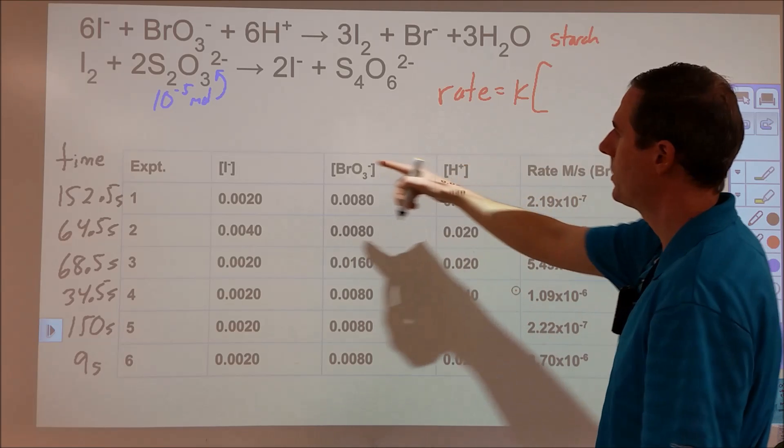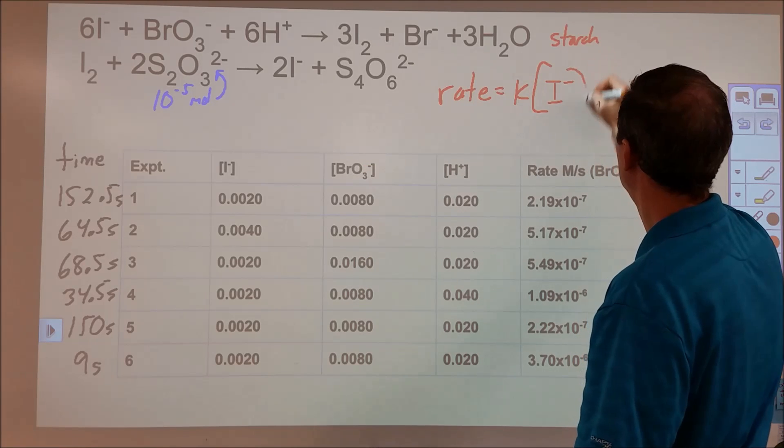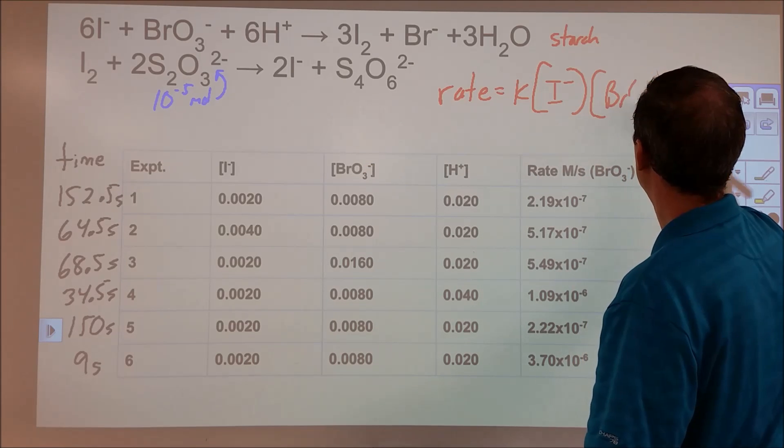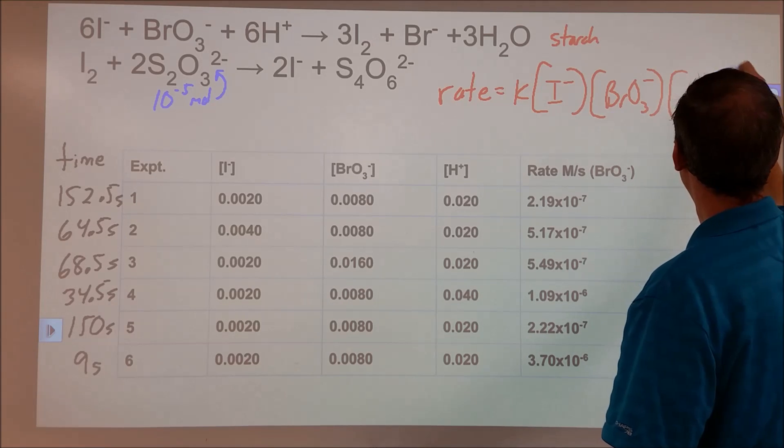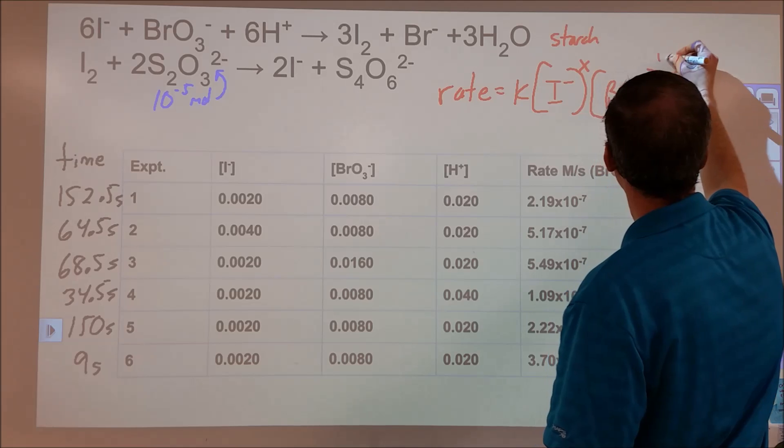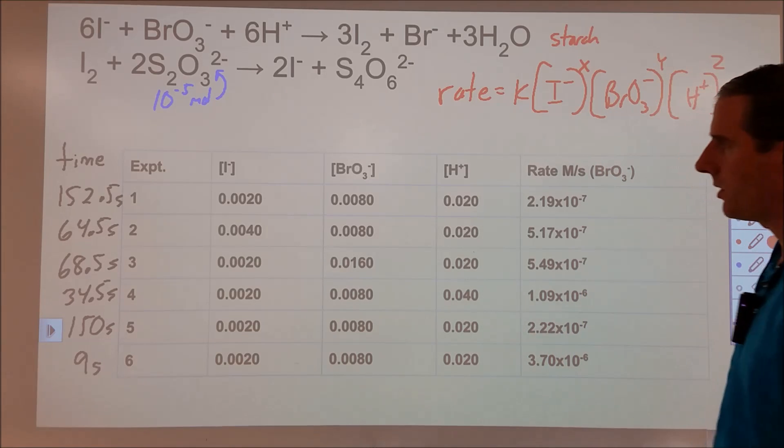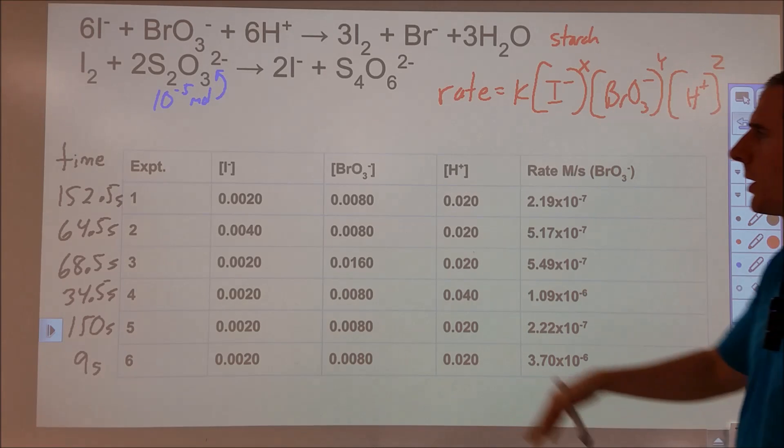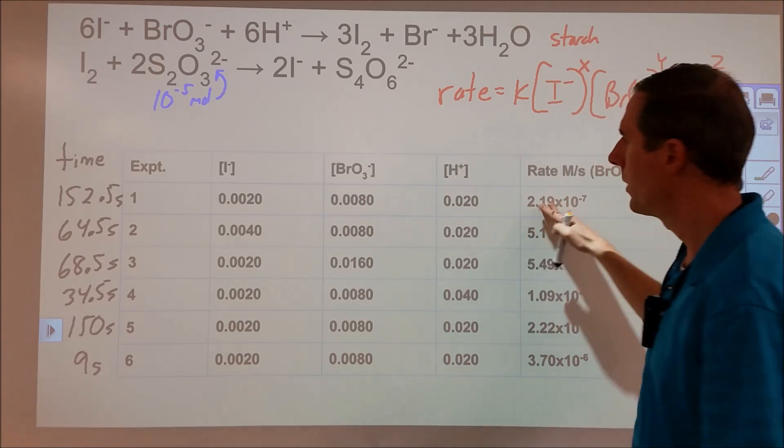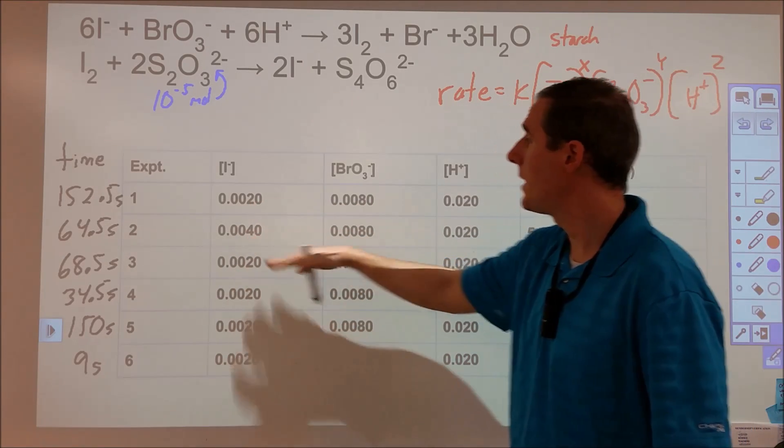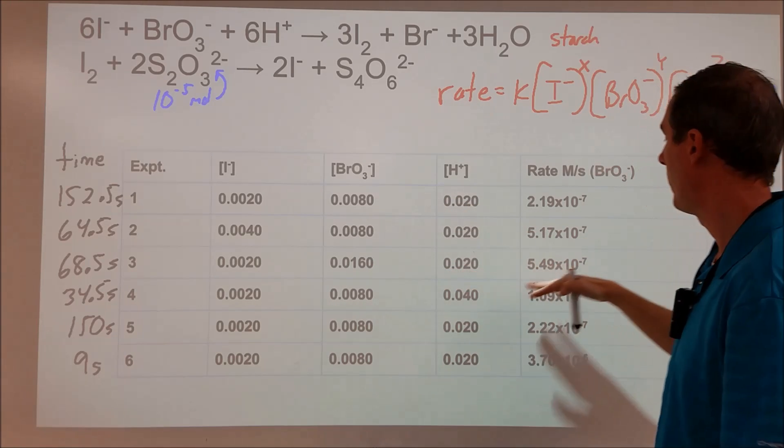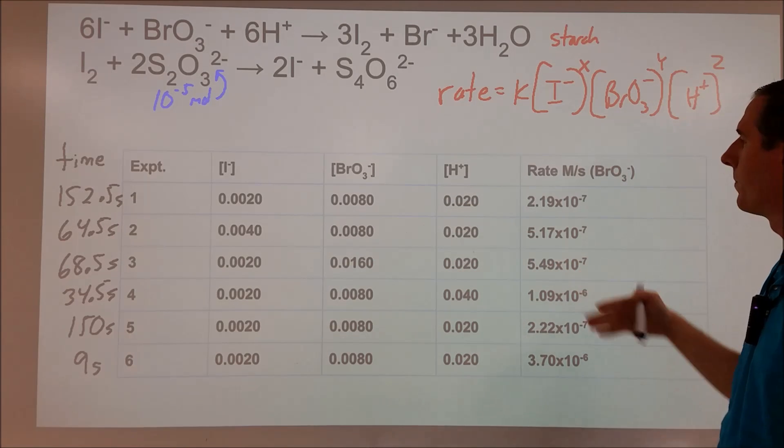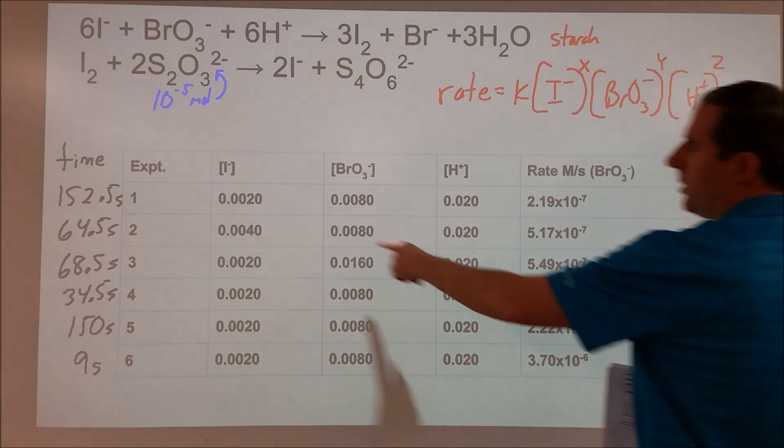What we want to do now is, we want to figure out what our exponents are for the following. Rate is equal to K times concentration of iodide times bromate times H+. And each one of these is raised to some power that we would like to figure out. So we'll call them X, Y, and Z for now. And what we're going to do is, we're going to use our first experiment, and then we're going to go through and look at when we doubled iodide, what happened to the rate? When we doubled bromate, we held everything else constant, what happened to the rate?